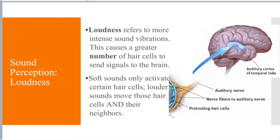Loudness refers to the intensity of sound vibrations, which causes a greater number of hair cells to send signals to the brain. In the inner ear, when the fluid moves faster, more hair cells are activated, sending more signals to the brain. Softer sounds only activate certain cells, whereas louder sounds move those hair cells and their neighbors — a kind of chain reaction. The cochlea is lined with hair cells surrounded by fluid, and when that fluid moves from vibrations in the middle ear, we see a transition into neural impulses sent to our temporal lobe for perception.